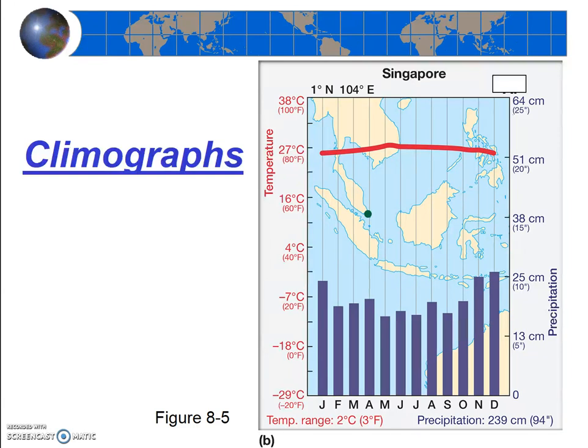Check out how much total rain they get in Singapore — 94 inches. Seriously, not a desert.